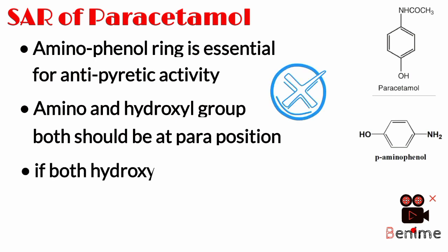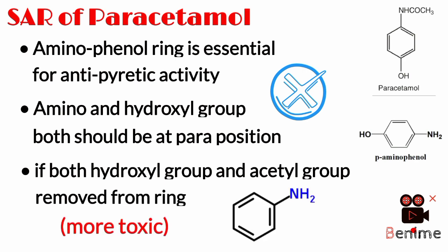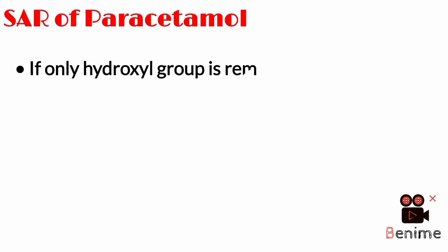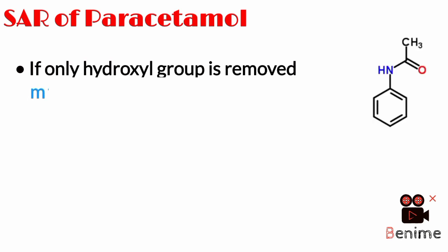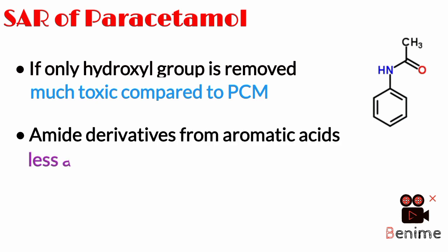If both the hydroxyl group and acetyl group are removed from the ring, the compound becomes aniline, which is more toxic. If only the hydroxyl group is removed, we get acetanilide, which is very much more toxic compared to paracetamol. Additionally, amide derivatives from aromatic acids are less active or inactive in nature.